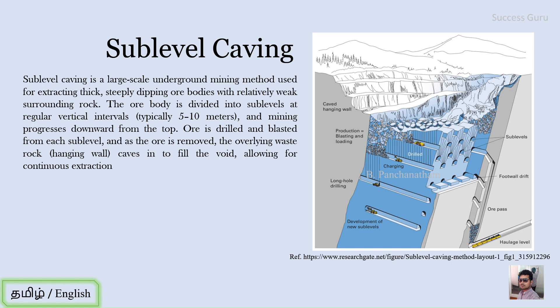As the ore is removed, the overlying waste rock caves in to fill the void, allowing for continuous extraction. They drill a blast hole, blast it, and remove the ore body. The rock above the ore body is called the hanging wall, and the rock below is called the foot wall. This hanging wall, which is already weak, will tend to fall in, and this is how the mine expands laterally.